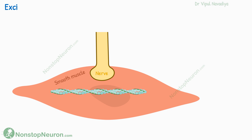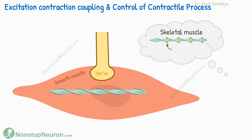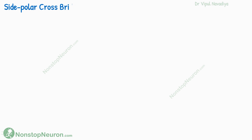To start with, the mechanism of excitation-contraction coupling and control of contractile process is different. Skeletal muscle uses troponin for the control of contraction. However, smooth muscle lacks this troponin complex, leading to a different mechanism for controlling contraction. We'll discuss more details of this control mechanism in a separate video.